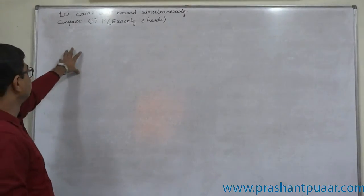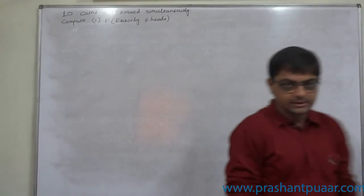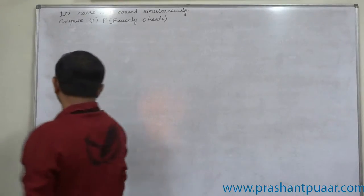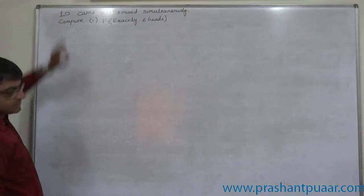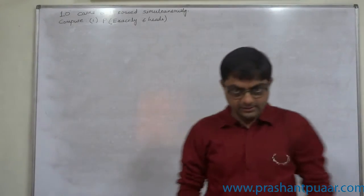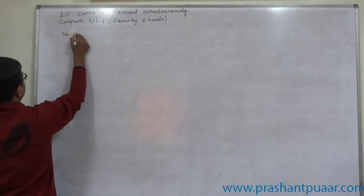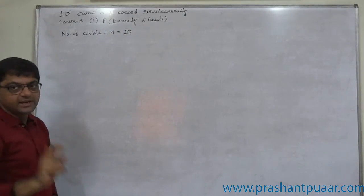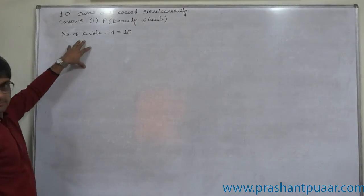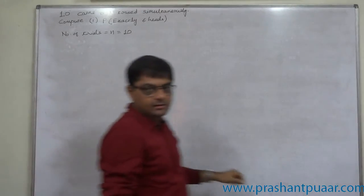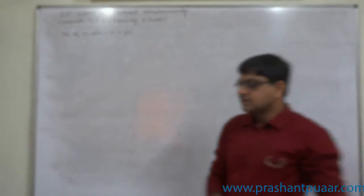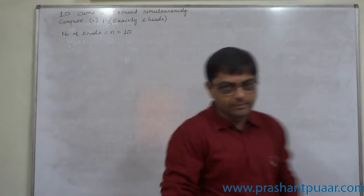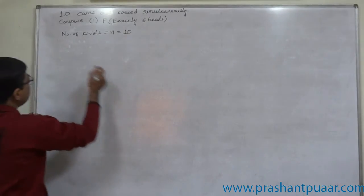10 coins are tossed simultaneously — compute various probabilities. The experiment is made up of tossing 10 coins. The number of trials n is 10, which is finite and fixed. The probability of getting a head or tail remains 1/2 for each coin, meaning probability of success and probability of failure remain constant in each and every trial.